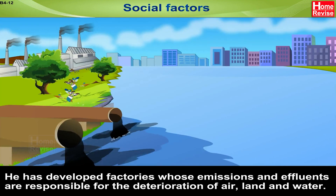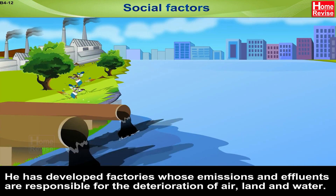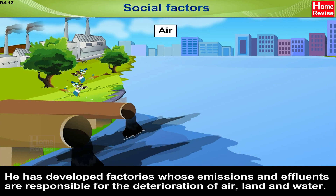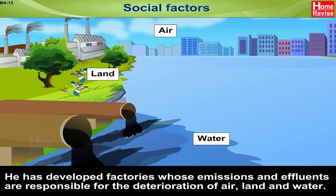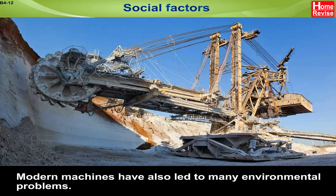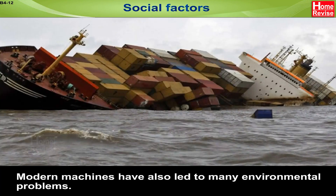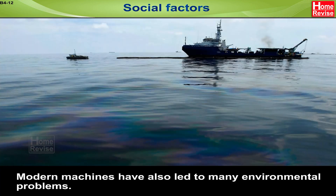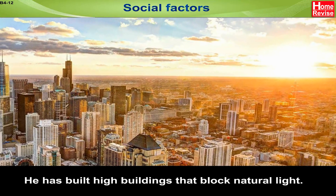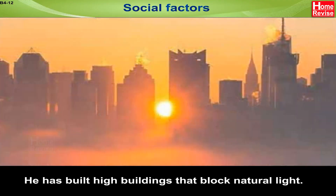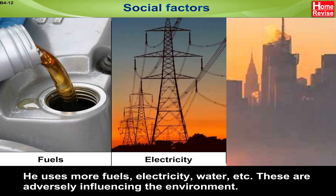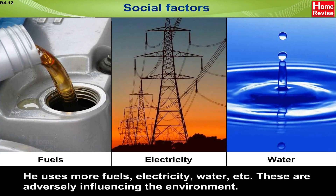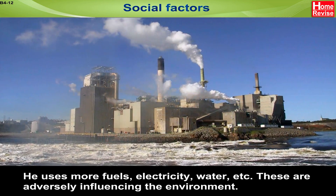He has developed factories whose emissions and effluents are responsible for the deterioration of air, land, and water. Modern machines have also led to many environmental problems. He has built high buildings that block natural light. He uses more fuels, electricity, water, etc. These are adversely influencing the environment.